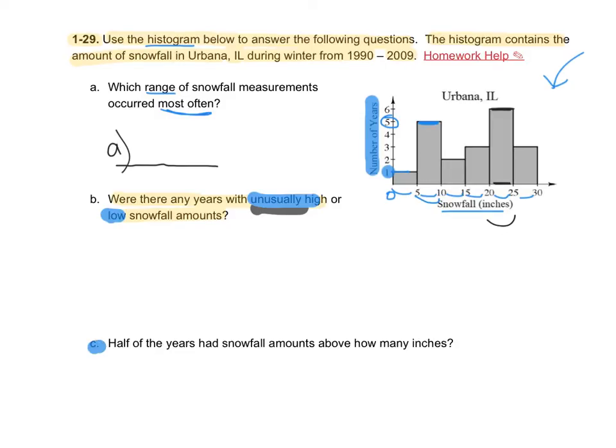For letter C, just a suggestion. It says half of the years had snowfall amounts above how many inches? We need to look at how many total years we have, then look at half of the years. Go ahead and try that on your own.